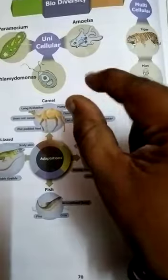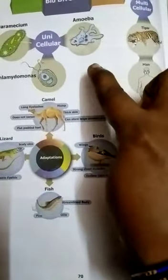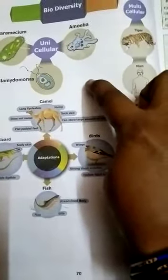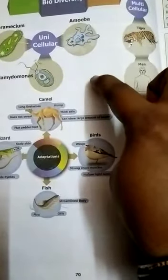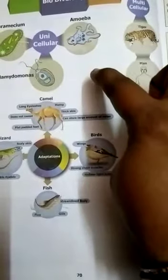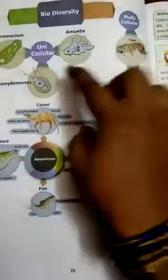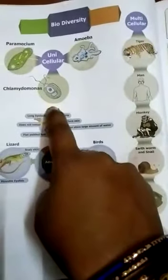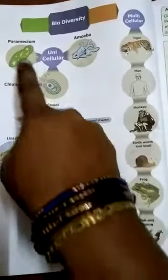Unicellular organisms are very small in structure — we are not able to see them with our normal eye. But they perform all the functions. Examples include paramecium, amoeba, and chlamydomonas. Each is a single cell that carries out all cellular functions.